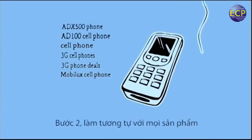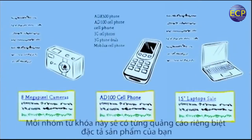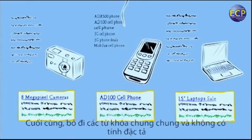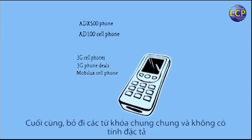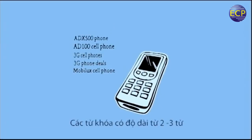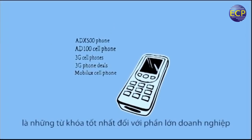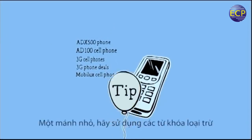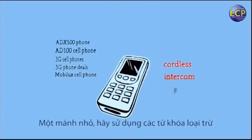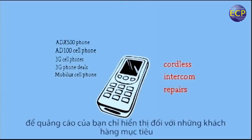Secondly, do this for all of your products. Each of these lists will become a separate ad group with a specific ad relating to it. And finally, remove any keywords that may be too general or irrelevant. For most businesses, two or three word keywords work best.